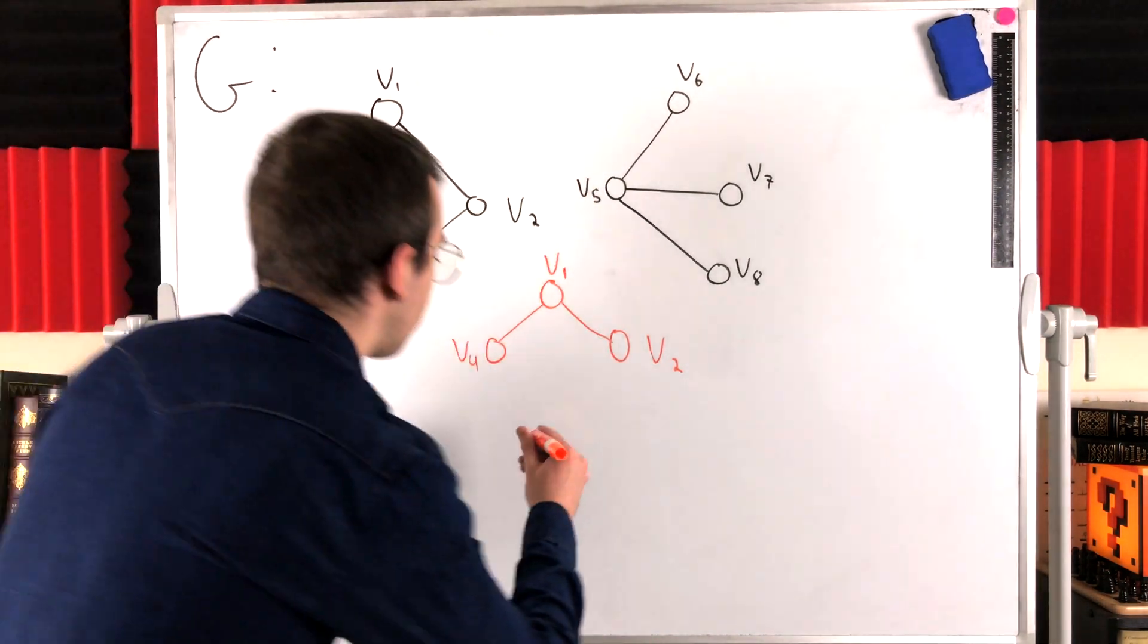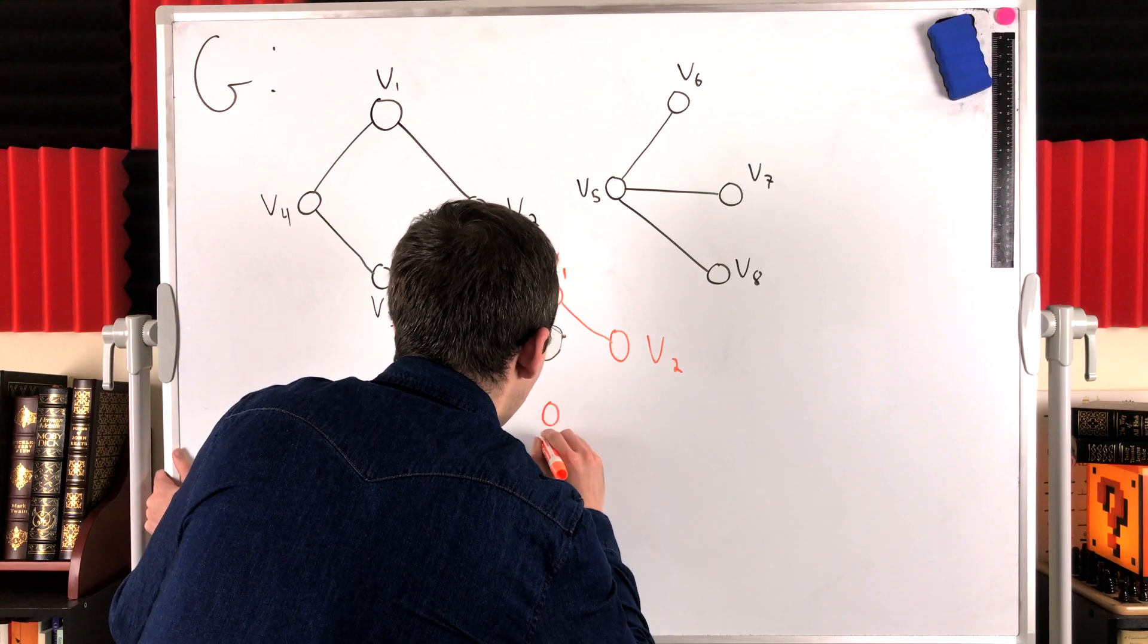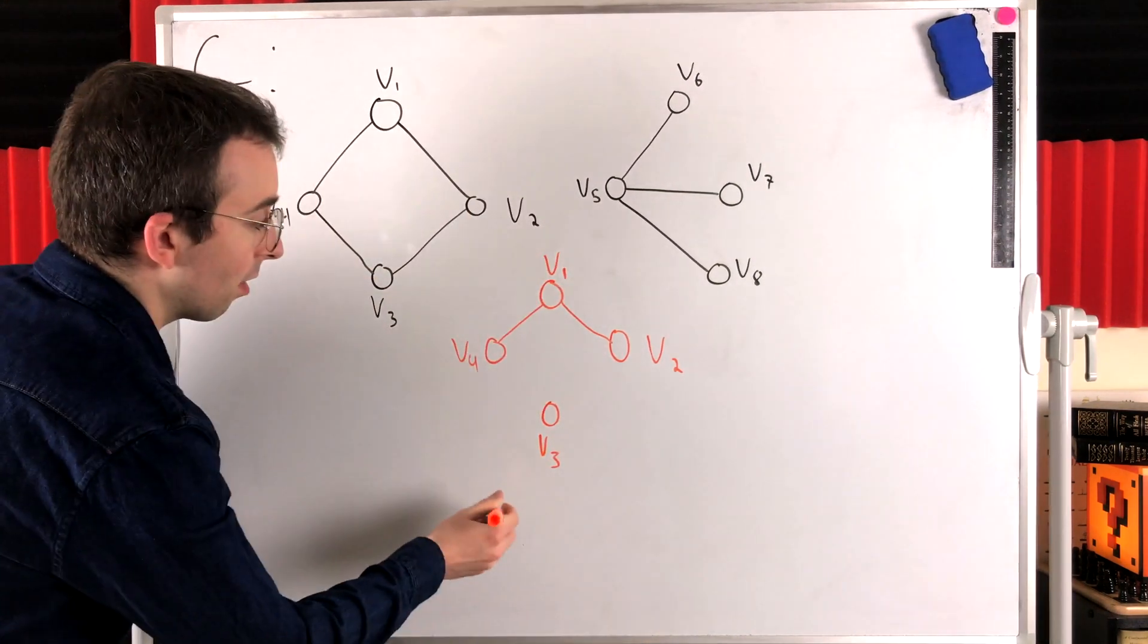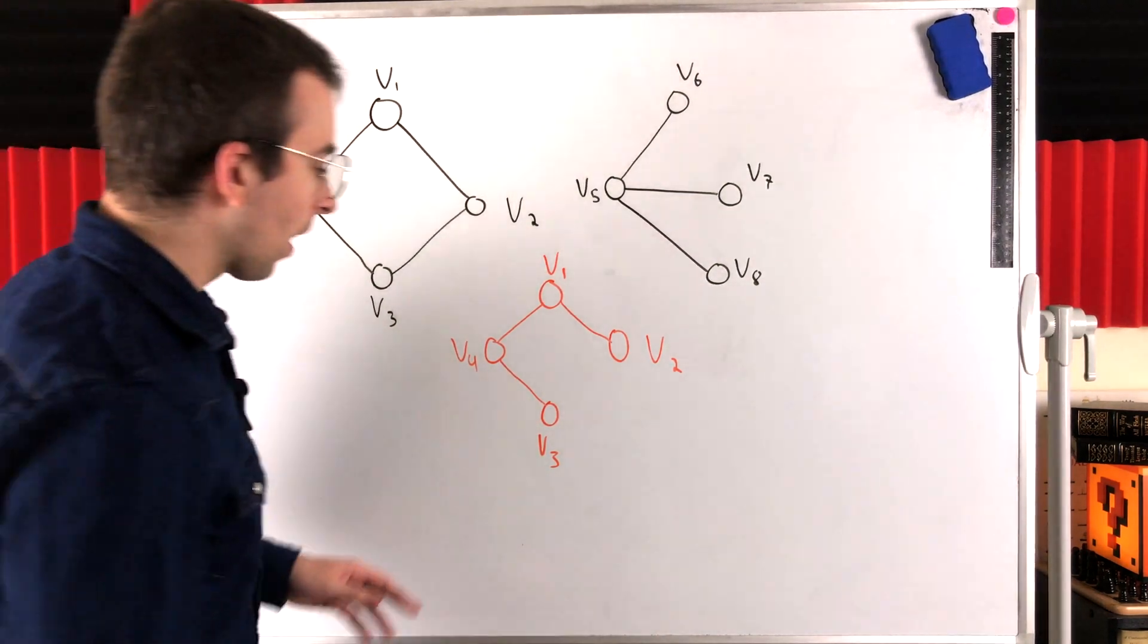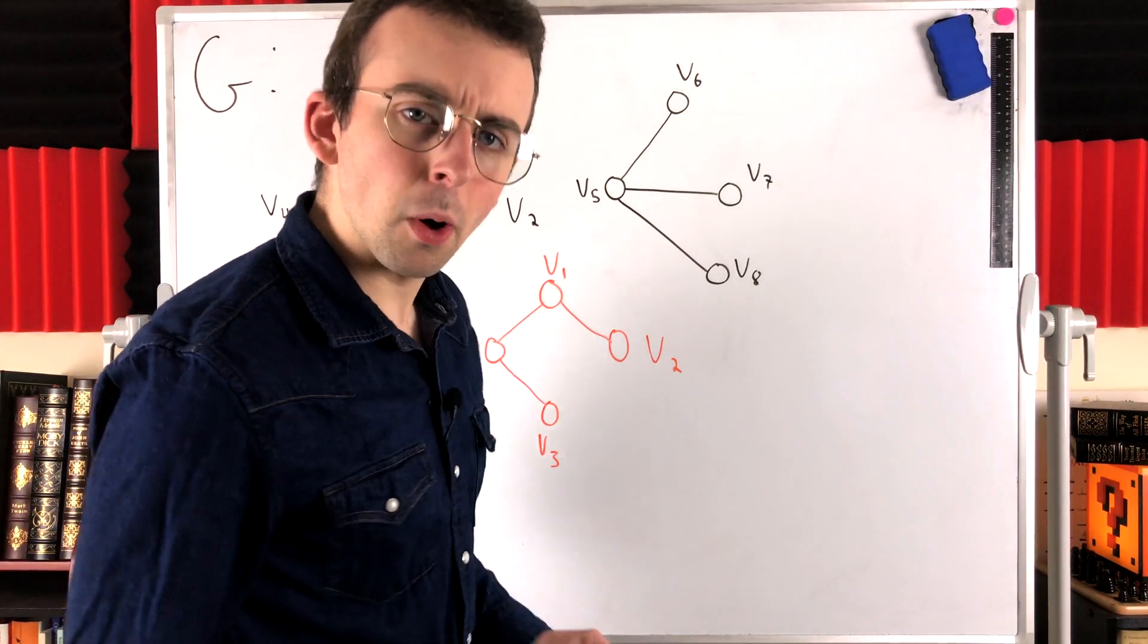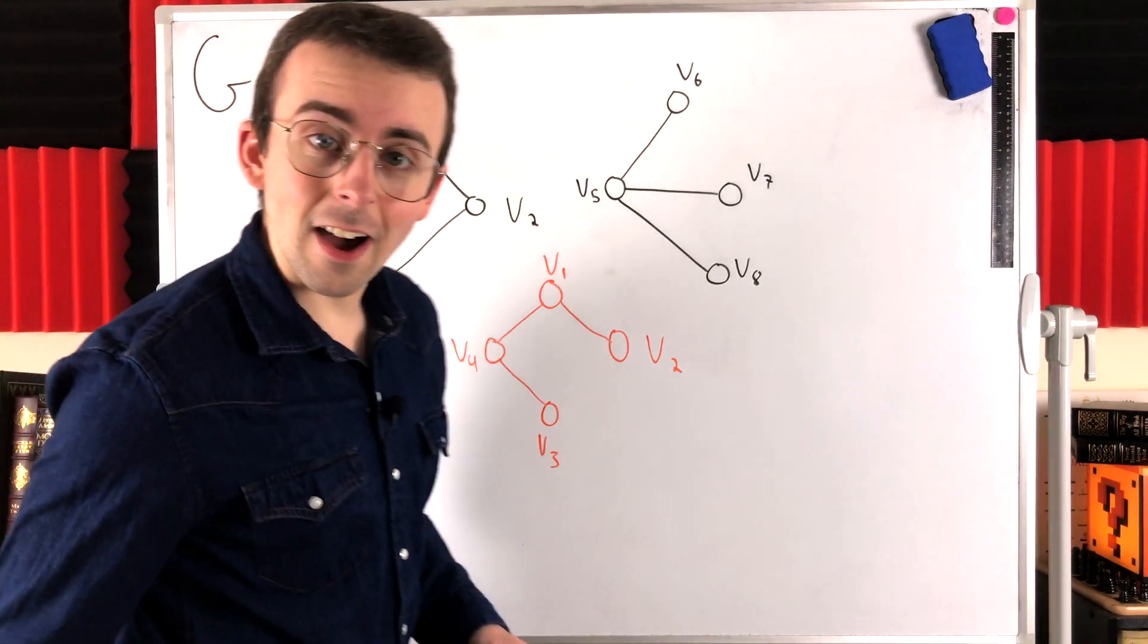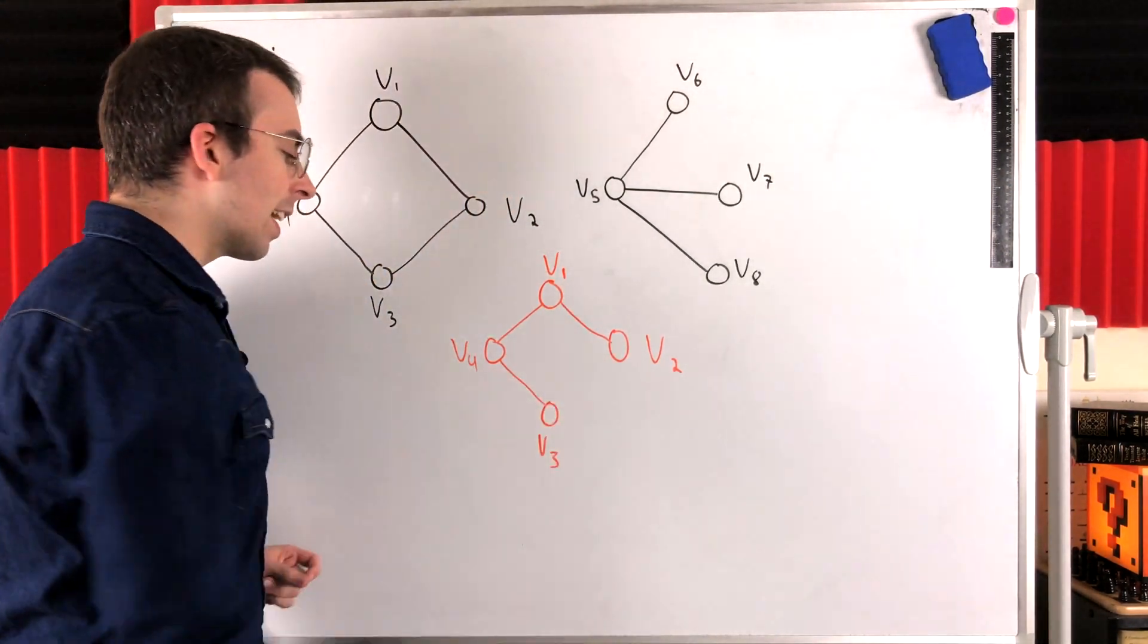For example, it's a proper subgraph of this connected subgraph of G that has the vertex V3 and this edge joining V4 and V3. How about this now? Is this a component of G? And no, it's not. Again, although it is a connected subgraph, it's not a maximal connected subgraph.